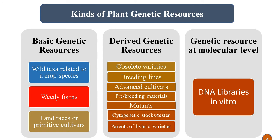In case of derived genetic resources, these are obsolete varieties — the varieties of the recent past. Then breeding lines, advanced cultivars, tree breeding materials, mutants, cytogenetic stocks or testers, and parental lines of hybrid varieties. The last category is DNA libraries in vitro, meaning different DNA libraries prepared in the lab.